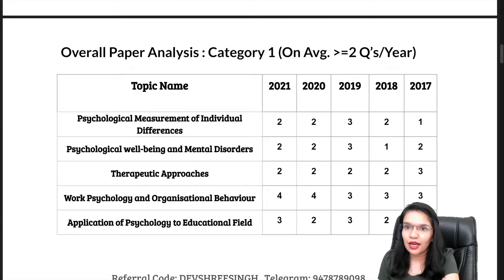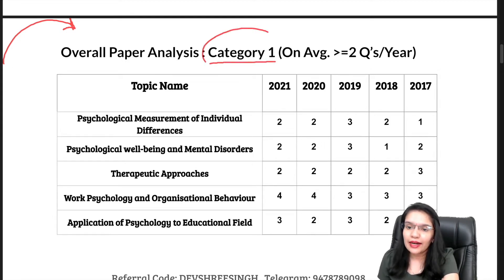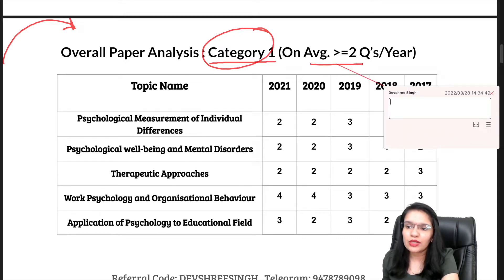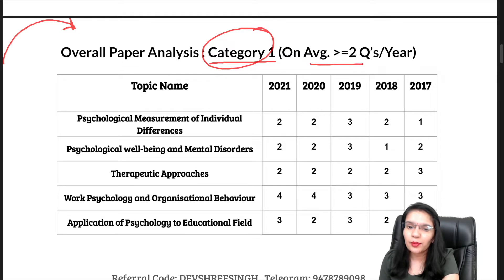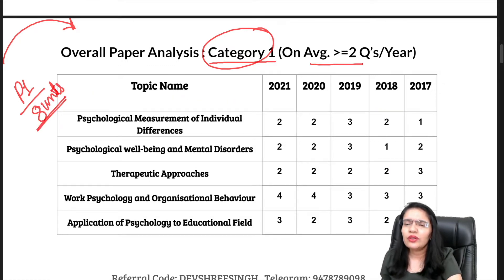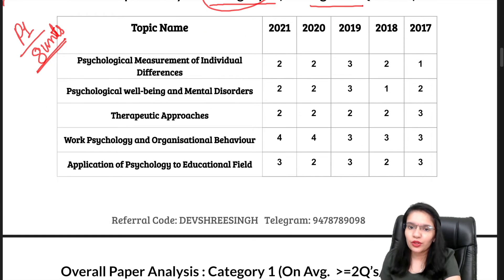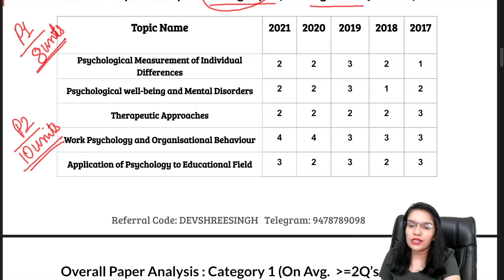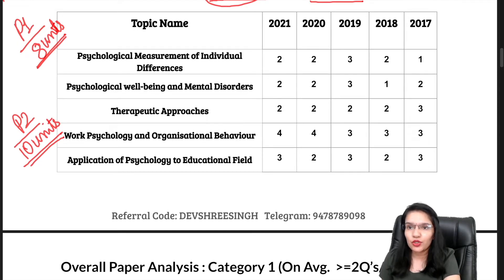I will tell you the insights in the mandatory section at the last. First, if you talk about the overall paper analysis, I have divided it into two categories. Category 1 is where, on average, every year there are more questions asked. In Paper 2, there are 10 units, and the distribution is more or less equal — you can see this every year.